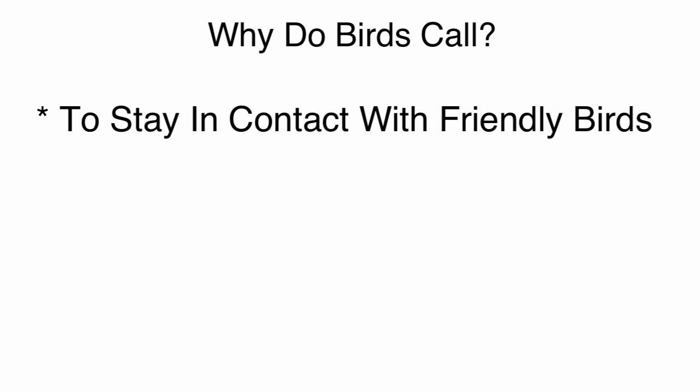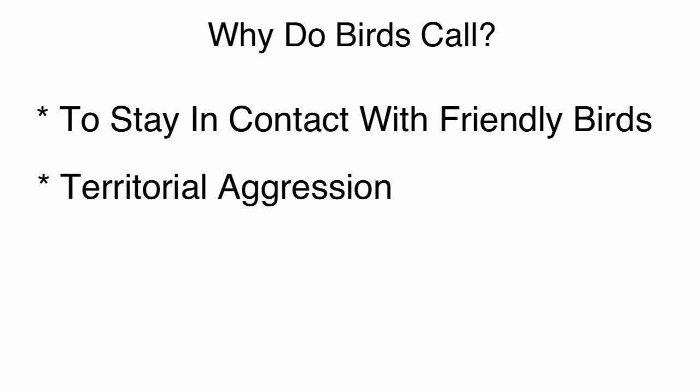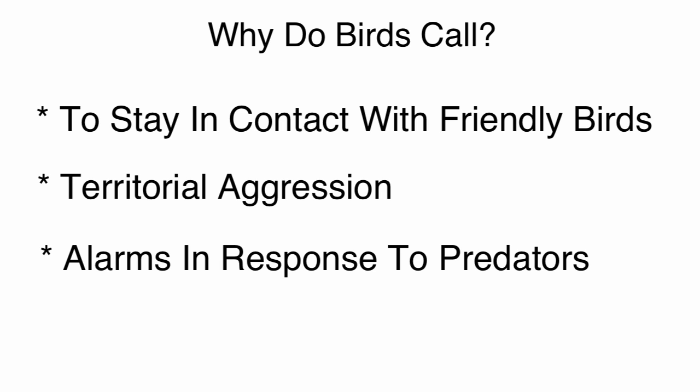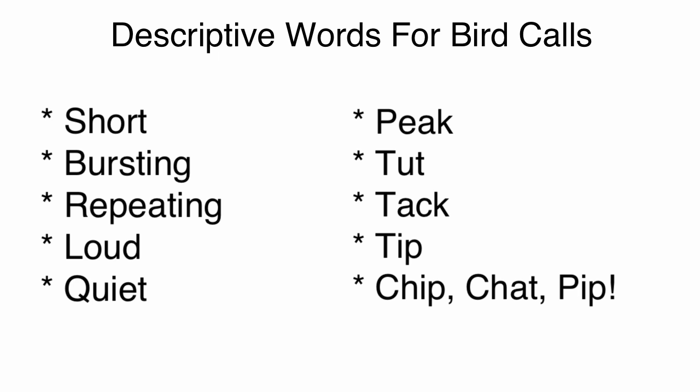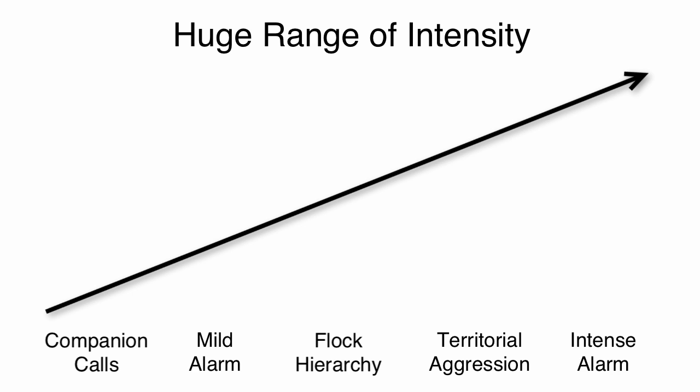Bird calls are most commonly used for the purpose of friendly communication between mated pairs of birds or between flocks of birds — you might call that a companion call. In those cases, they're usually fairly quiet and soft, and you sometimes have to listen pretty carefully to notice them. But calls are also used for territorial purposes and in alarm situations, and in those situations you'll probably notice much more intense vocalizations. If we were to make a list of descriptive words for calls, we might say: short, bursting, repeating, loud, quiet — peak, tut, tack, tip, chip, chat, pip. There's obviously a huge range from very mellow back-and-forth calling to absolute screaming alarm calls.